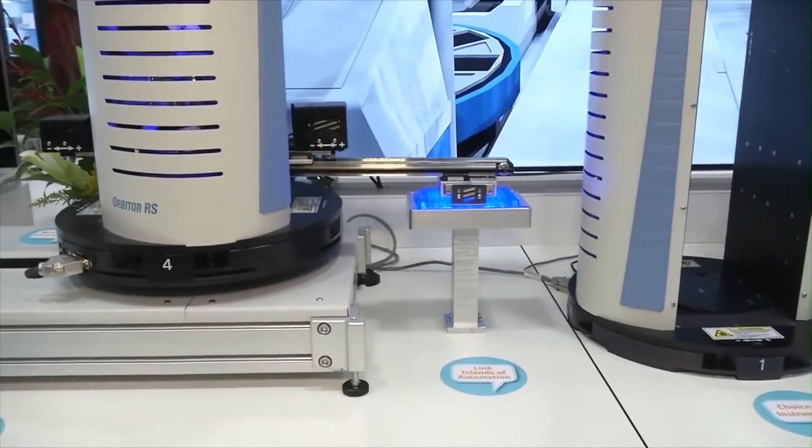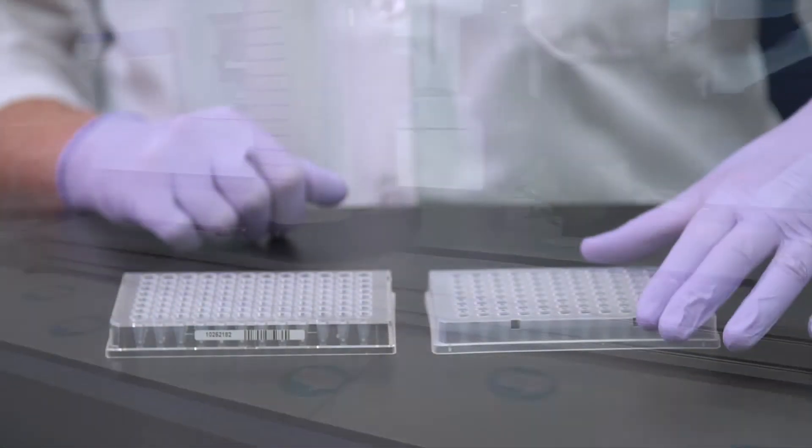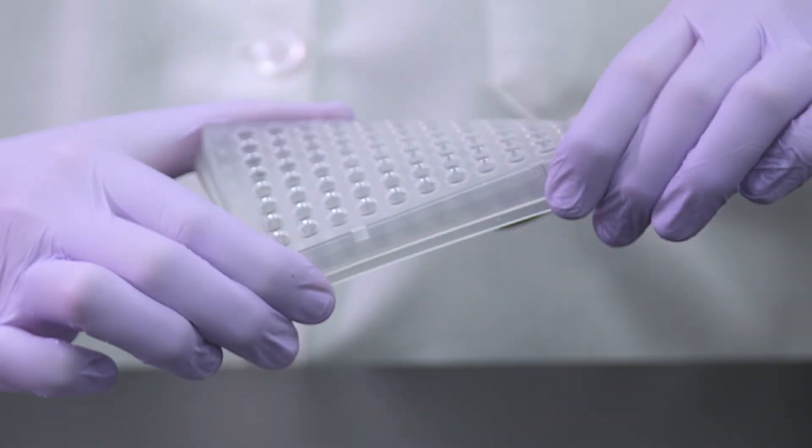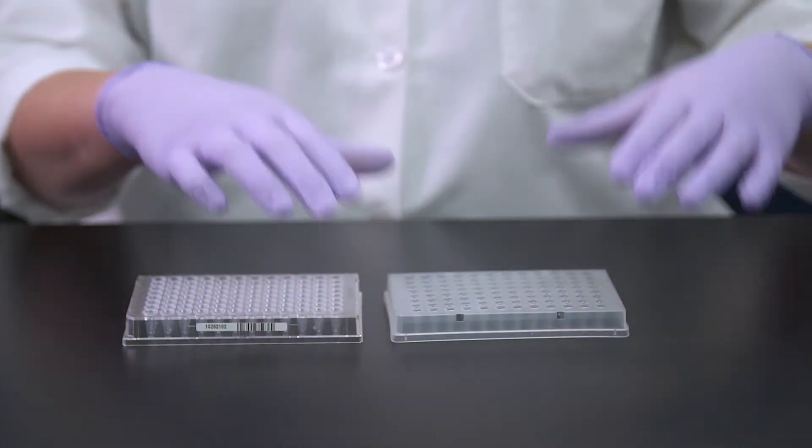A standard polypropylene PCR plate is not able to withstand the pinching of the plate introduced by the grippers. Therefore, the plate becomes distorted, making it difficult to place the plate in its next deck position on the robot or the thermal cycler block.